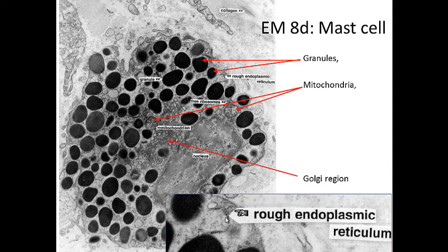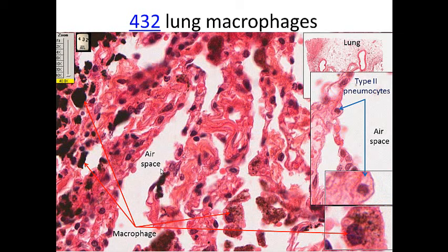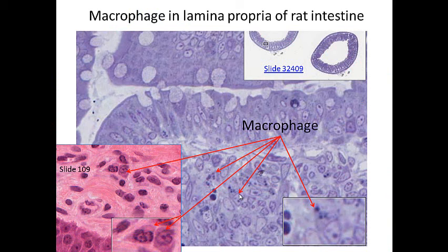In electron microscopy the mast cell shows a nucleus, granules, mitochondria, and endoplasmic reticulum responsible for making the granules. In the lungs we see air spaces, and where the lungs have picked up carbon — probably from a smoker — we can see macrophages with a nucleus and debris being phagocytized. Don't confuse these macrophages (dust cells in the air spaces) with the type II pneumocyte in the corner, which produces surfactant. Type I cells are where gas exchange occurs.